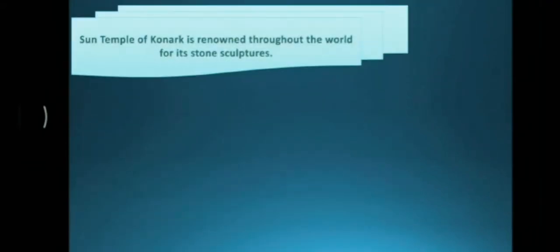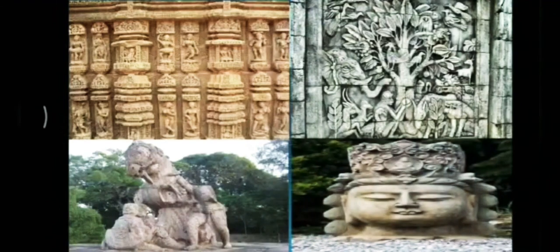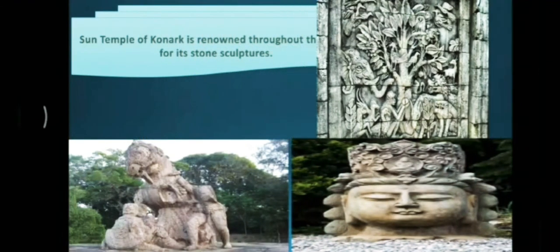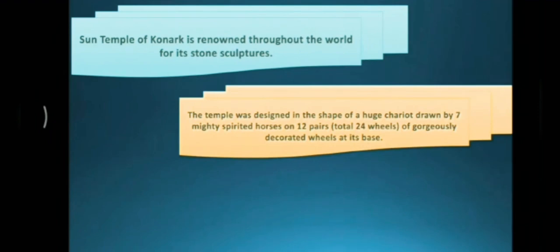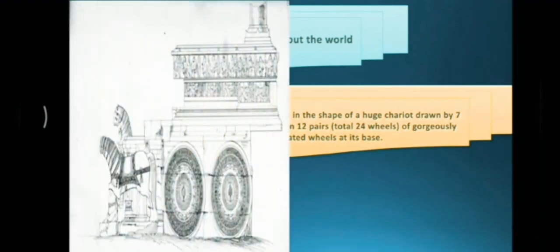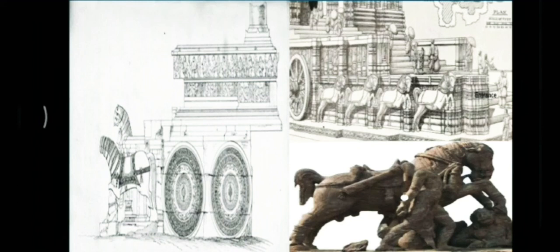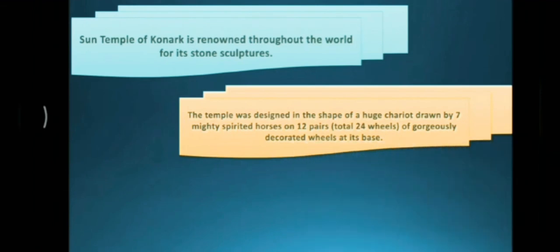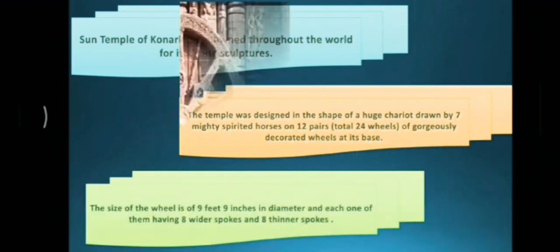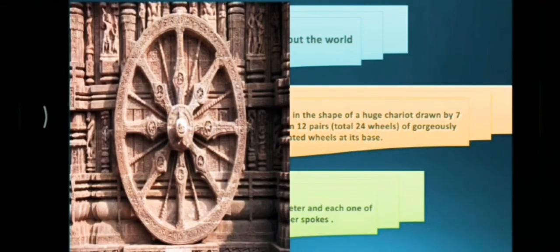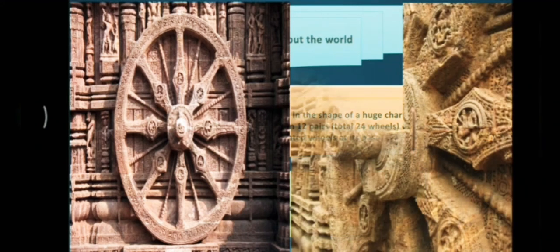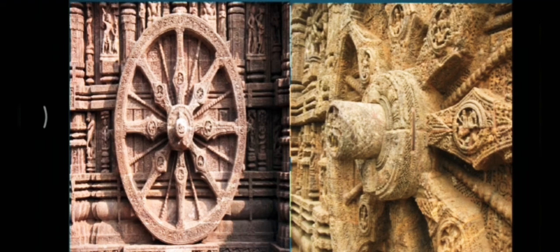The Sun Temple of Konark is renowned throughout the world for its stone sculptures. The temple was designed in the shape of a huge chariot drawn by seven mighty spirited horses on 12 pairs of gorgeously decorated wheels at its base. The size of the wheel is 9 feet 9 inches in diameter, and each one of them having 8 wider spokes and 8 thinner spokes.